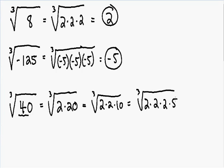The idea is you want to find groups of 3. Since we have a 3 in our root, we want to find groups of 3. Notice how we have a group of 3 twos inside of the root. What we want to do is separate these groups of 3.